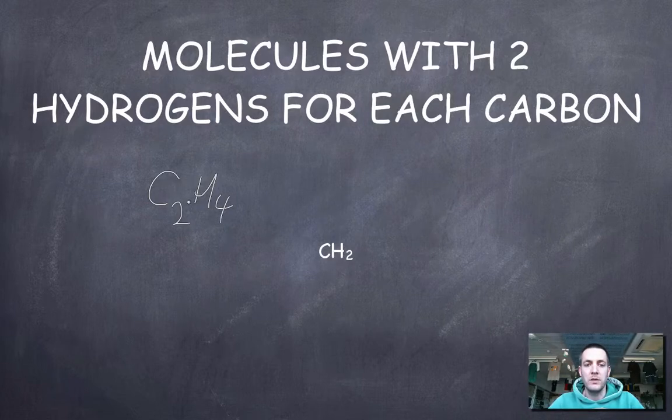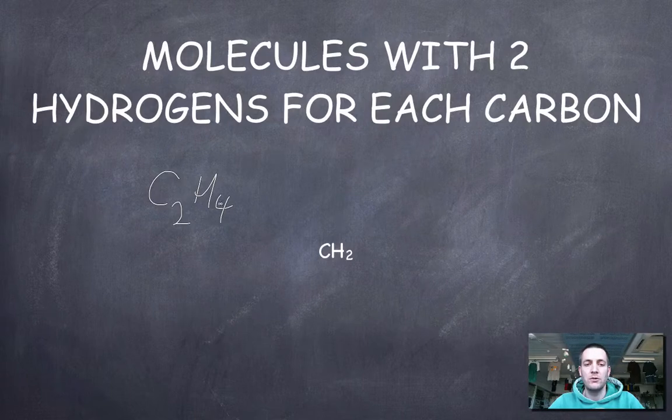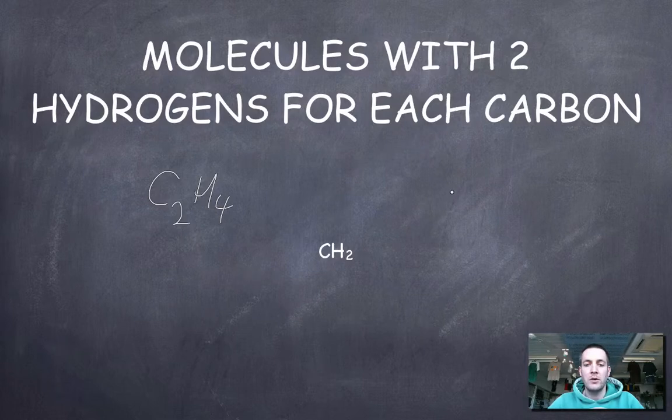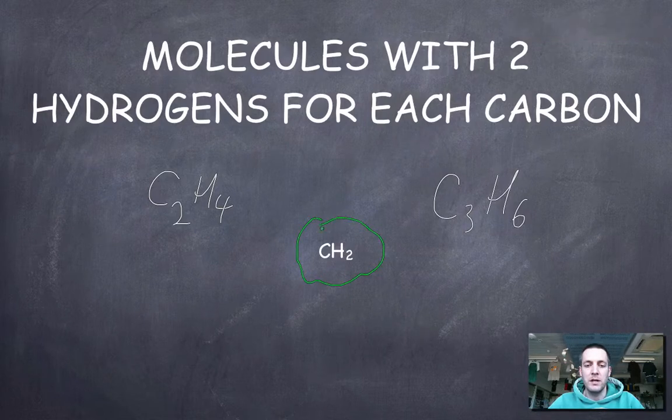However, you could have a molecule that had the formula C2H4 that would have this empirical formula. This would not be its empirical formula; it would have a ratio of 2 hydrogens to every 1 carbon. But writing C2H4 is not an empirical formula because 4 to 2 is not the simplest whole number ratio. But I could also have a molecule with C3H6 that would still have this empirical formula.